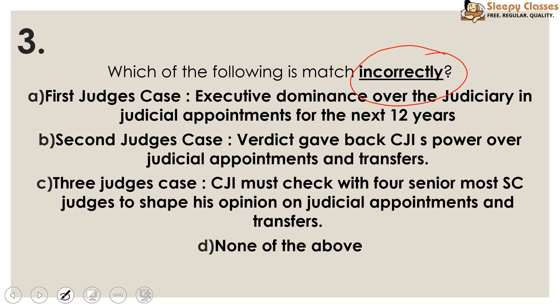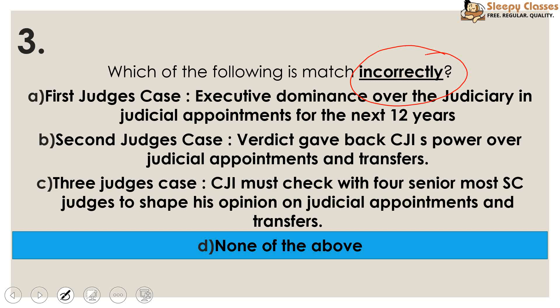In the First Judges' Case, the executive decides judicial appointments — executive dominance. In the Second Judges' Case, the Chief Justice of India is given power over judicial appointments and transfers — so the judiciary gains that power. In the Third Judges' Case, the Chief Justice of India must consult the four most senior Supreme Court judges to shape his opinion on judicial appointments and transfers. After two minutes, your answer is none of the above — all three matches are correct. Make sure you write this down.